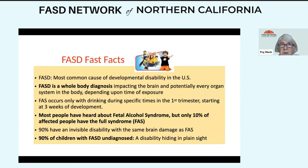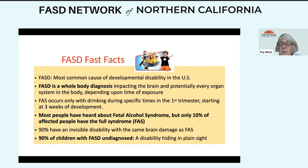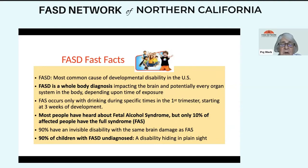That is important to know as we think about child find. If you suspect a child or a teen has an FASD, they may be hiding in plain sight. The research expanded from focusing on facial characteristics to recognizing FASD as a brain disorder, and then expanded again to recognize FASD as a whole body disorder, impacting the brain and potentially every developing organ system in the body in utero depending upon the time of exposure to alcohol. With FASD as an invisible disability, the sad finding is that 90% of children with FASD go undiagnosed.